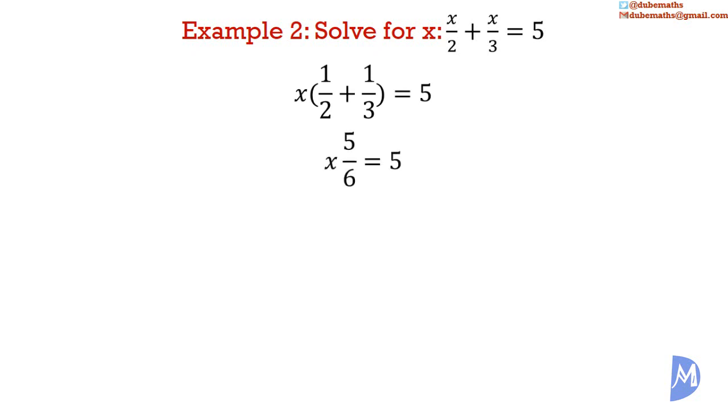So then we would divide by 5 over 6 on both sides. The 5 over 6 would cancel on the left-hand side to leave x. And then we would add 5 divided by 5 over 6 is the same as 5 multiplied by the reciprocal. 5 multiplied by 6 over 5. And the 5s would cancel to give again that x is equal to 6. So factorizing would give exactly the same answer.